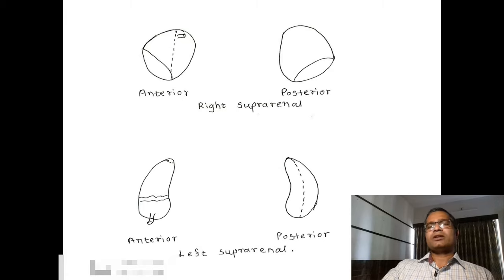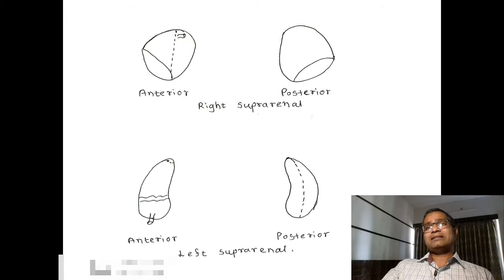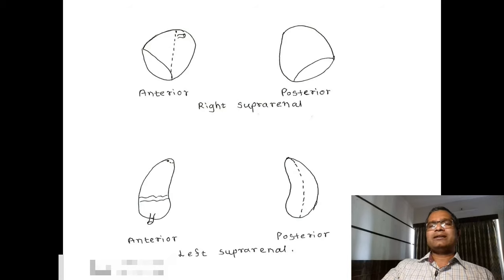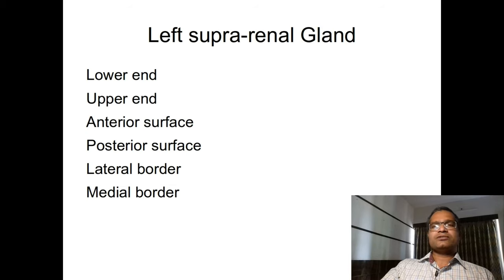The anterior surface of the left suprarenal gland, in its upper part, comes in relation with the cardiac end of the posterior surface of the stomach, which lies in relation with the lesser sac. Just below this, the anterior surface relates to the body of the pancreas. The splenic artery is also present in relation with this anterior surface. Near the lower end, there is the exit of the left suprarenal vein. The posterior surface is divided into lateral and medial parts: the lateral part relates to the anterior surface and upper end of the left kidney, while the medial part relates to the left crus of the diaphragm.